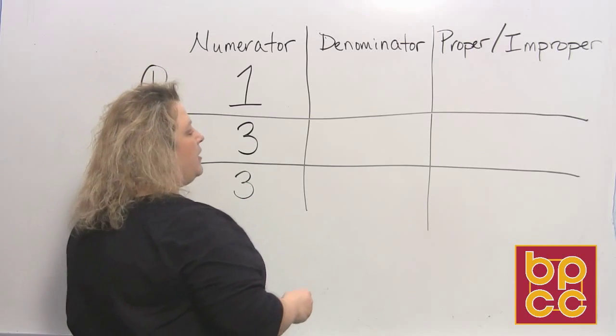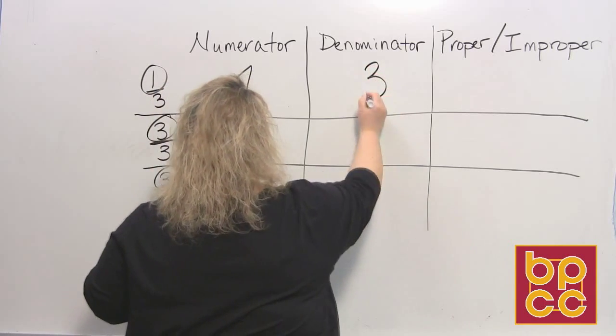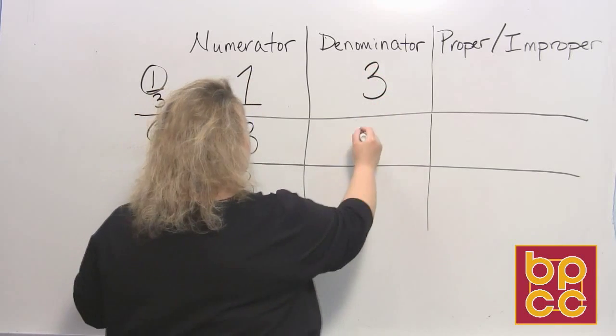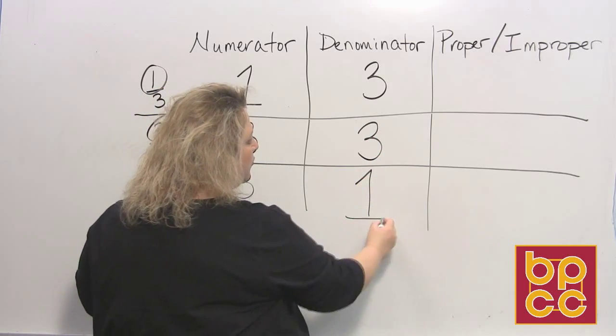Then we come to the denominator, which would be the bottom. So the bottom on this first fraction would be a three. On the second fraction, it's a three. And on the bottom fraction, it's a one.